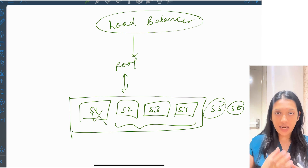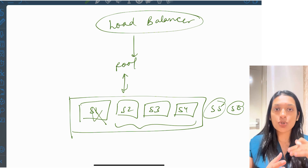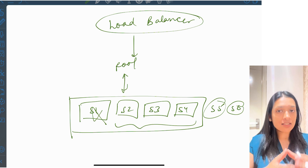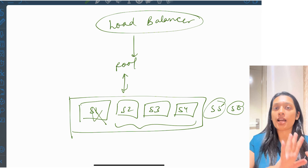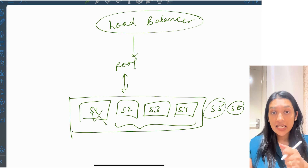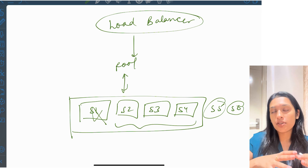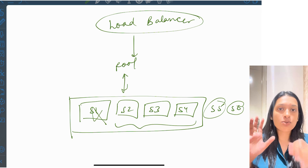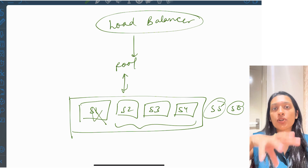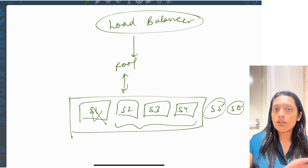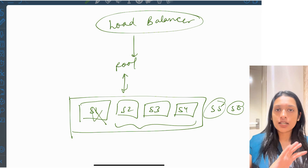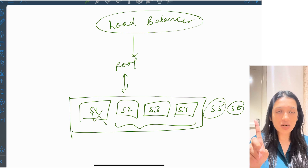The load balancer handles all incoming client requests and redirects them to the pool of servers. Our task is just to add or remove servers based on incoming traffic — the rest is handled by the load balancer: failure handling, distribution of requests, and making sure that if one server is handling too many requests, the load is distributed among other servers so it won't become a bottleneck. There are multiple publicly available load balancers — nginx is one example. You can go through their documentation to understand them better.